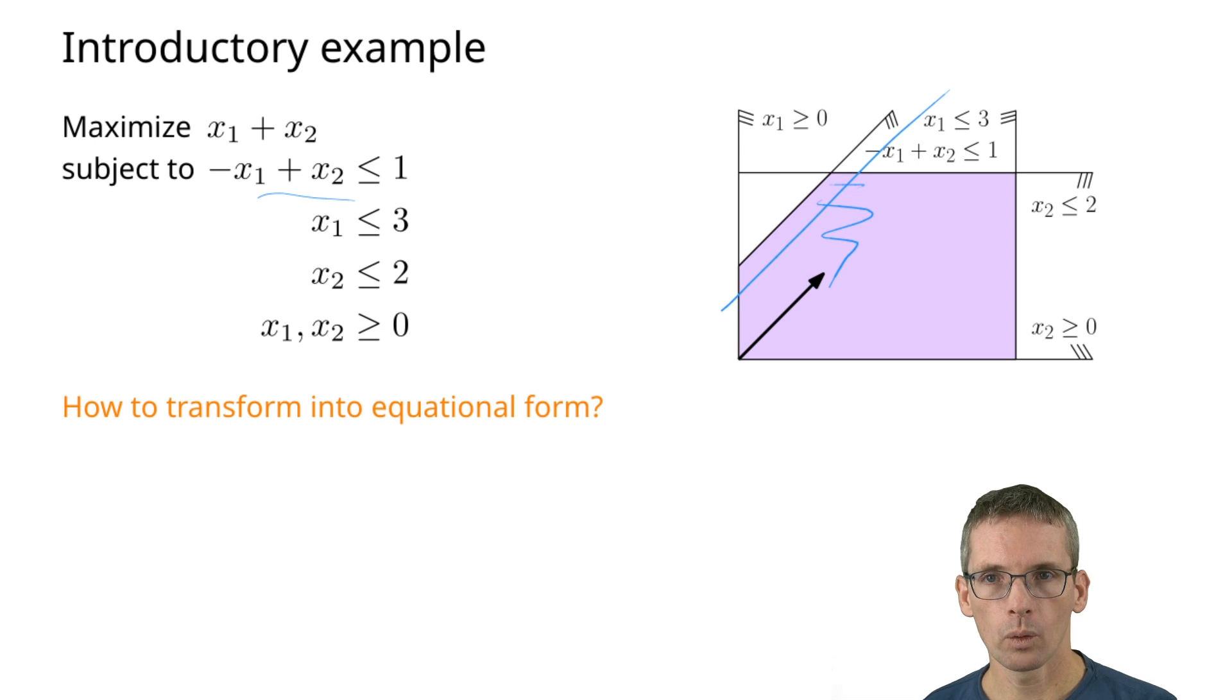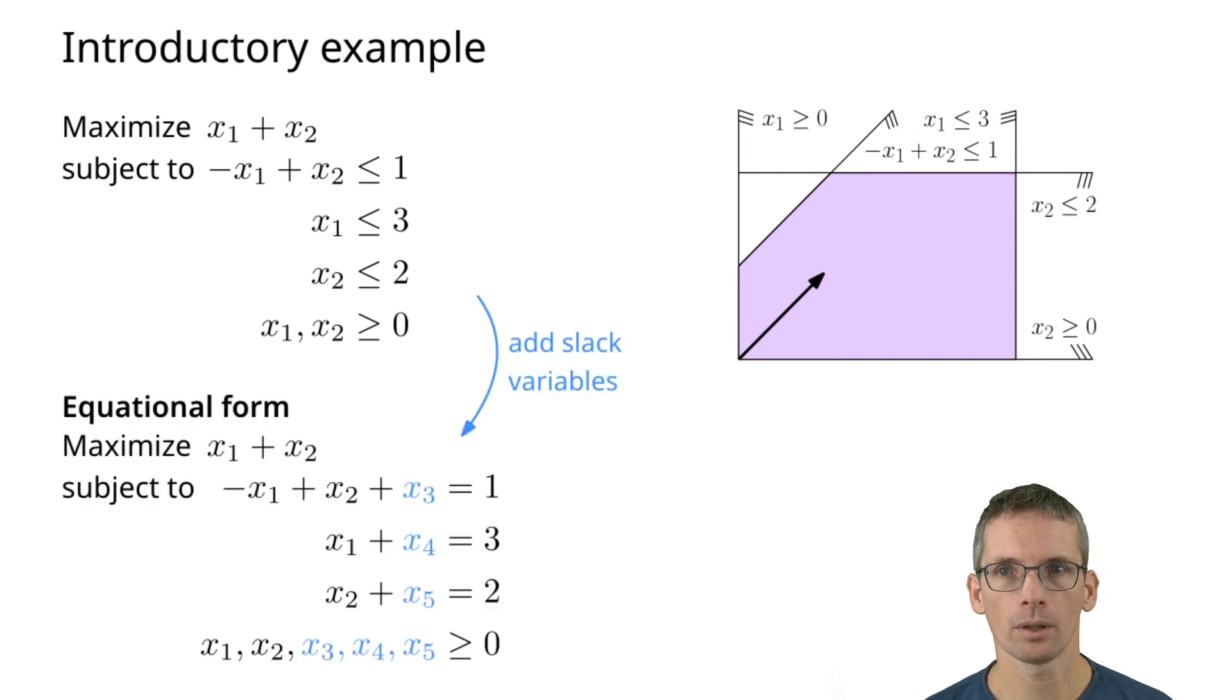Now we first need to rewrite this in equational form. The key here is using slack variables. For each of the inequalities we introduce a slack variable such that instead of having less than or equal 1 here, we have a plus x3 here, x3 being non-negative, and then we have equals 1. We can do this using x4 and x5, and now this is in equational form.